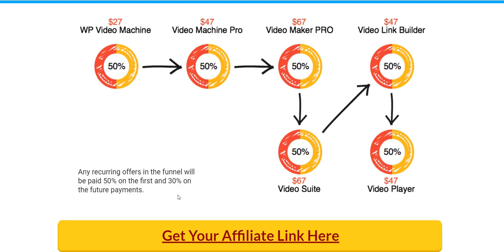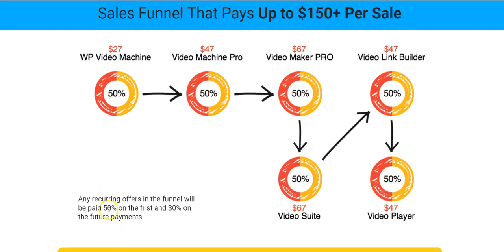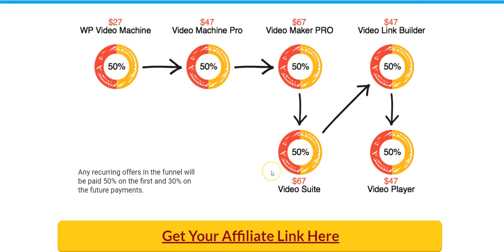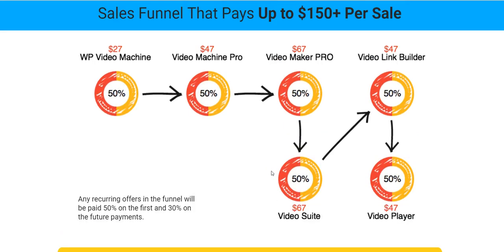That's the whole sales funnel. I would recommend the front-end and OTO one, plus the Video Maker, which is really cool because it creates videos for you automatically. I'd suggest going for OTO one and OTO two. The rest is up to you — whichever suits your business.